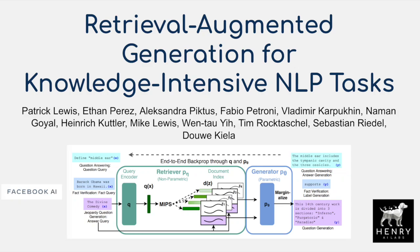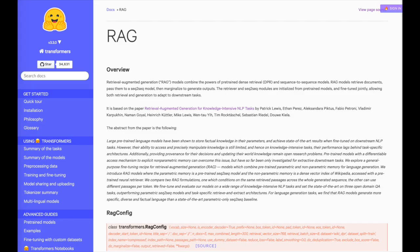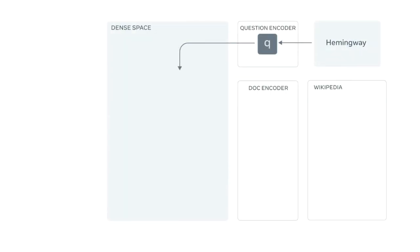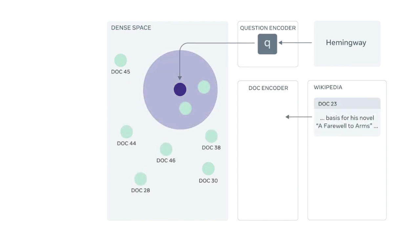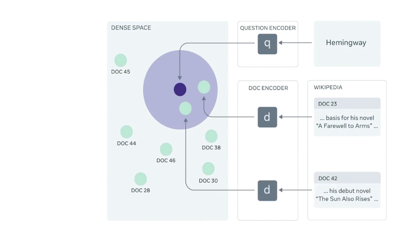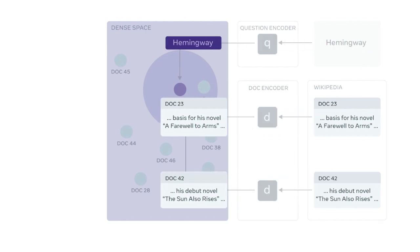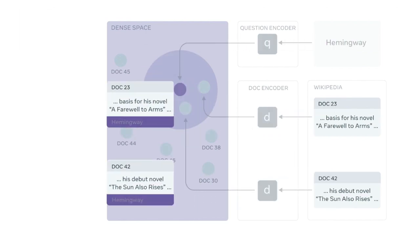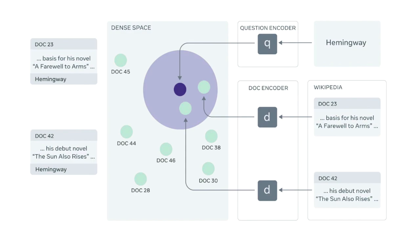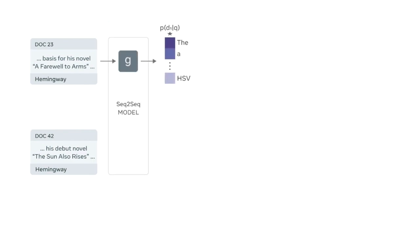This video will explain the Retrieval Augmented Generation (RAG) model developed by researchers at Facebook and recently open-sourced in the Hugging Face Transformers library. The idea of this model is to augment language models with context, so instead of just using the input sequence X to generate output text Y, you would also prepend retrieved documents Z to the input sequence X, so the generated text Y is a product of both X and retrieved documents Z.